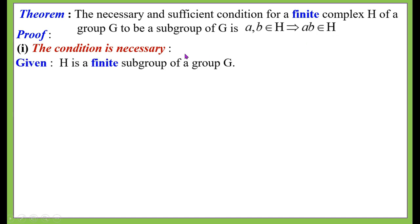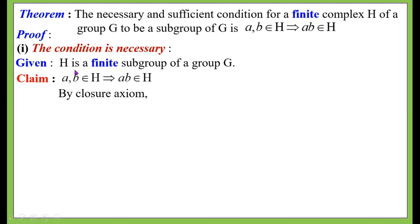Proof — the condition is necessary. We are given that H is a finite subgroup of a group G. We have to show that a, b ∈ H implies a·b ∈ H. Since H is a subgroup of G, H itself is a group, and hence H satisfies all four axioms: closure, associativity, identity, and inverse. By the closure axiom, a, b ∈ H implies a·b ∈ H.